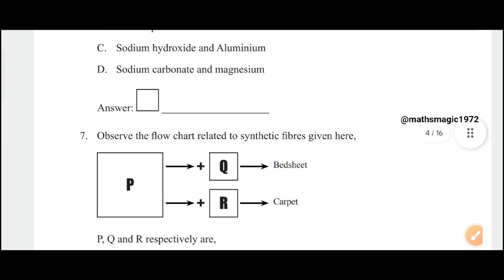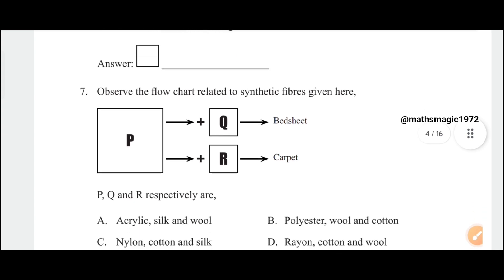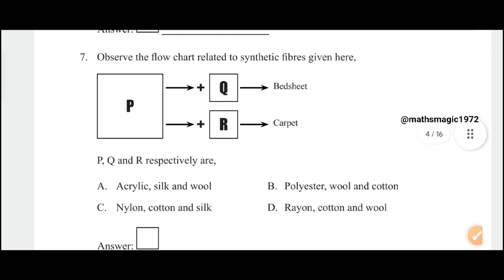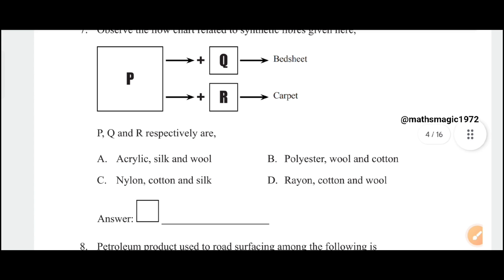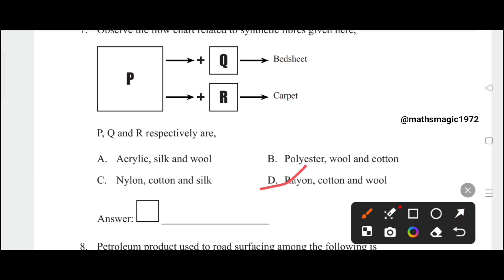Observe the flowchart related to the synthetic fibers given here. P, Q, R respectively are: A) acrylic, silk, wool, B) polyester, wool, cotton, C) nylon, cotton, silk, D) rayon, cotton, wool. The correct answer is option D, rayon, cotton, wool.